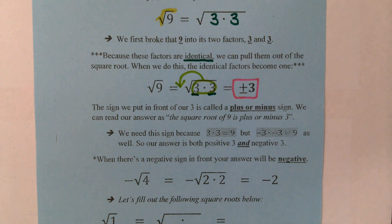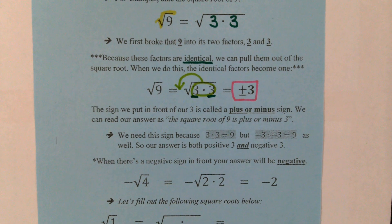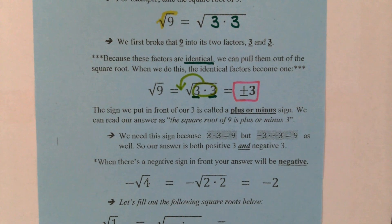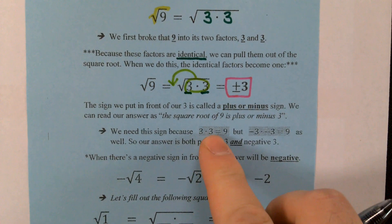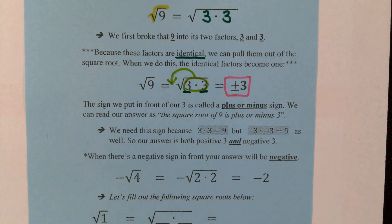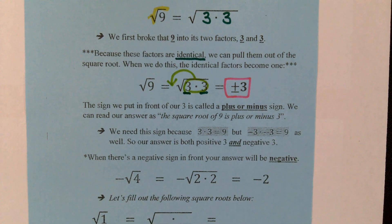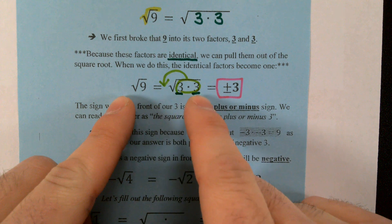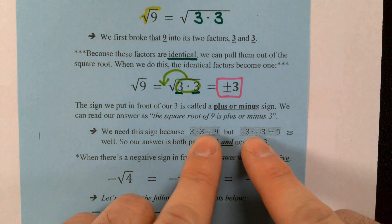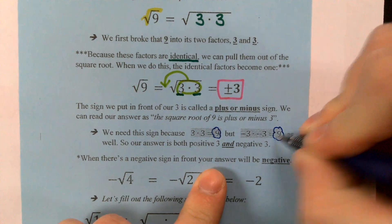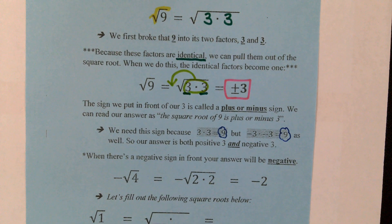We need this sign because 3 times 3 is 9, but negative 3 times negative 3 is 9 as well, so our answer is positive 3 and negative 3. The reason why we need this interesting-looking sign is because 3 times 3 equals 9, and negative 3 times negative 3 is also equal to positive 9. If we're starting with positive 9 and taking the square root, we don't know if there are two positive 3s or two negative 3s — they both multiply to produce positive 9. That's what this plus or minus symbol means: both positive 3 and negative 3.